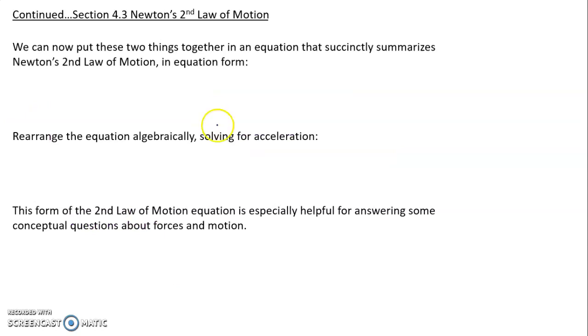Now we can put these two things together into equation form. So we can say that F net equals mass times acceleration. We can also divide both sides by the mass. And so we can also say acceleration equals net force divided by mass. And this particular form right here is really useful if you're answering any conceptual questions.